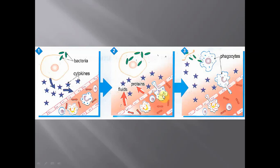Diapedesis is the process by which immune cells, especially phagocytes, can move to the site of infection. This also leads to various signs of the inflammatory reaction: redness and heat due to the increased blood flow to the area, pain because the inflammation presses on adjacent nerves, and swelling under the skin.